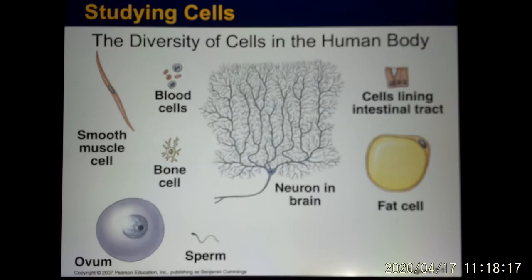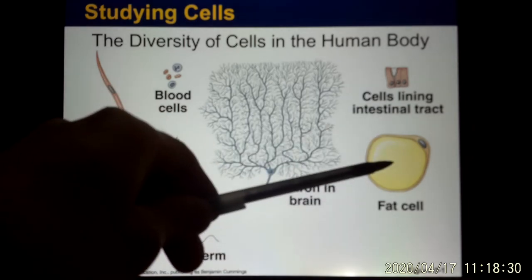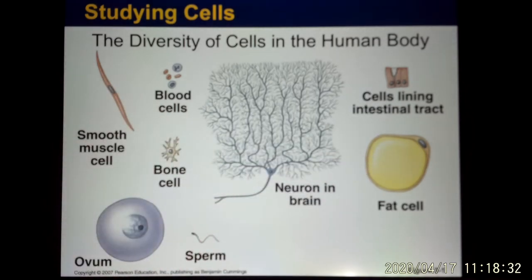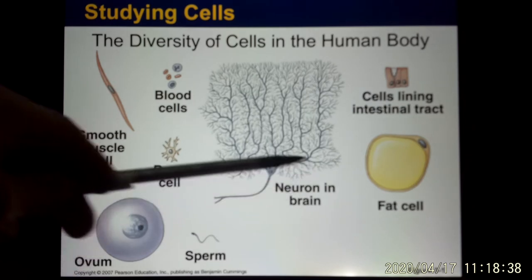Cells have different structures to perform their functions. Like the muscle — it's a long structure, able to contract and produce big power. And the fat cells look like fat because the inside is mainly fat, and their function is to store fat. So different cells have different functions, and their structures are very different.